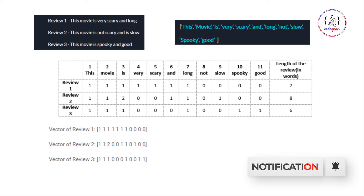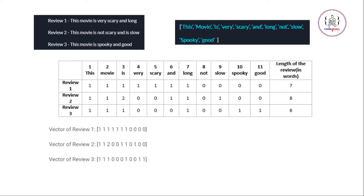Now all the reviews are represented in numeric or vector form, and we can supply this matrix to our machine learning model. This is how Bag of Words works. However, there is a problem: if your corpus is large — say tens of thousands of reviews — you will have tens of thousands of unique words, and the resulting matrix will be very sparse with a lot of zeros. We will see how to overcome this in the next video.